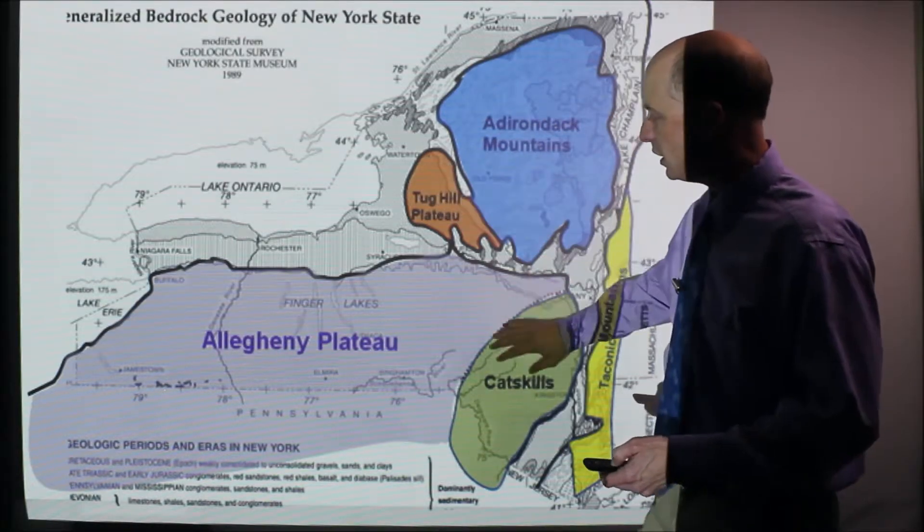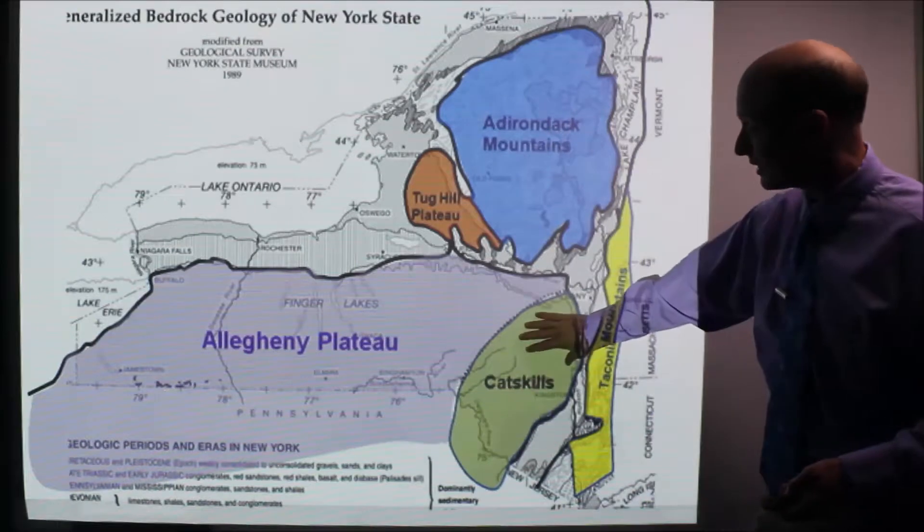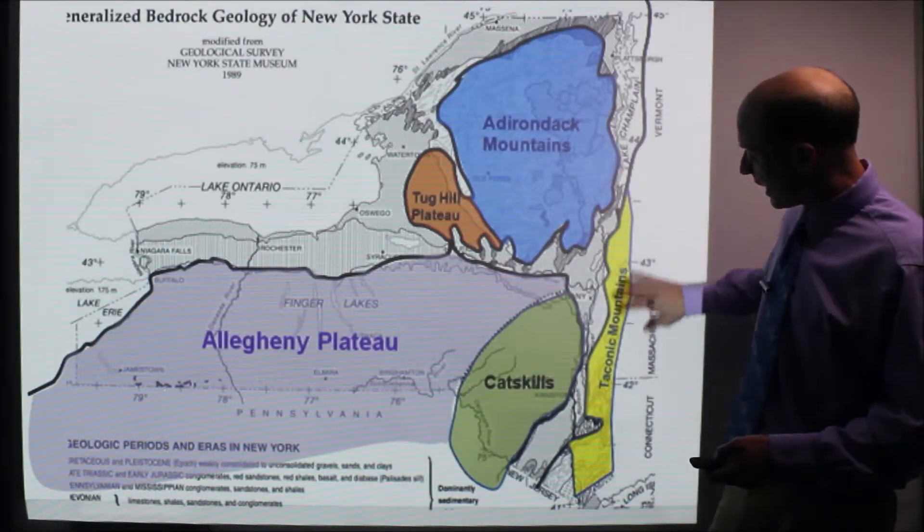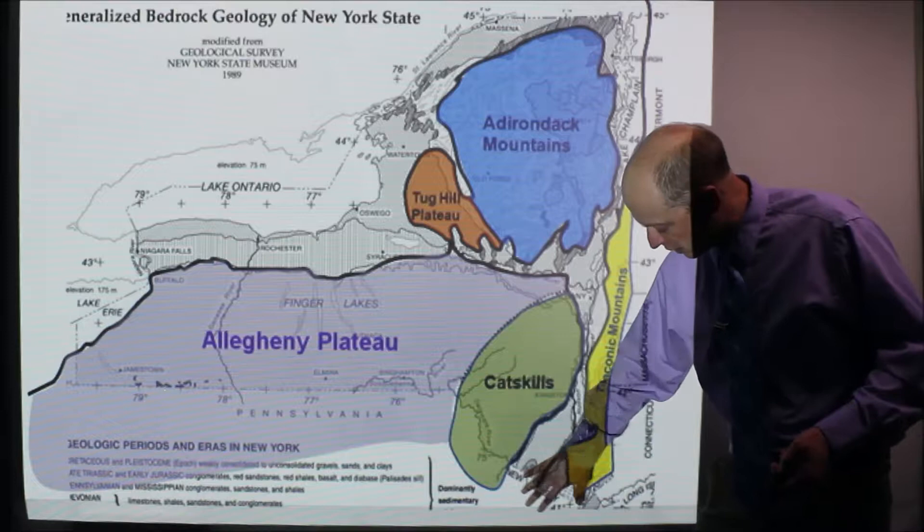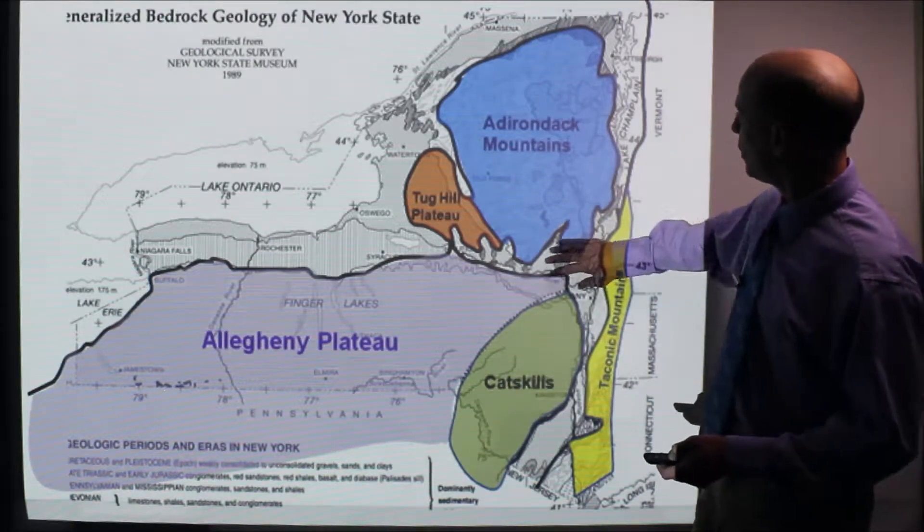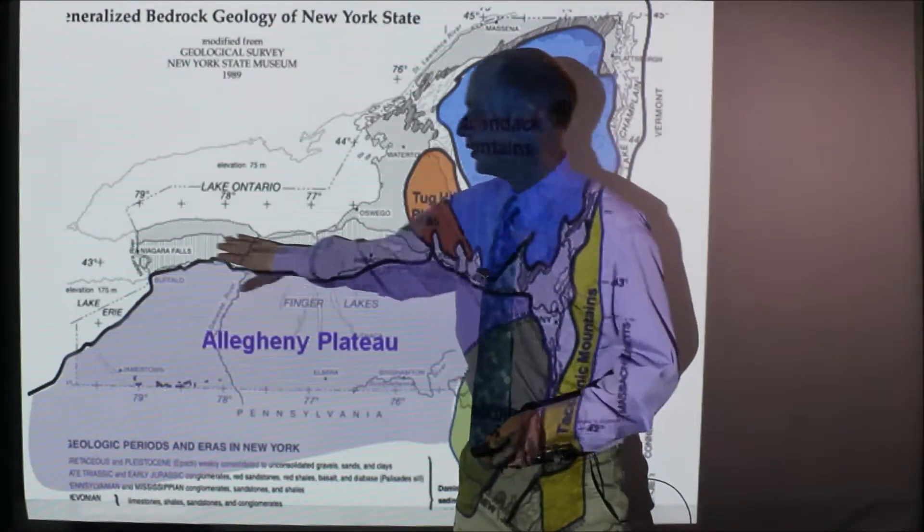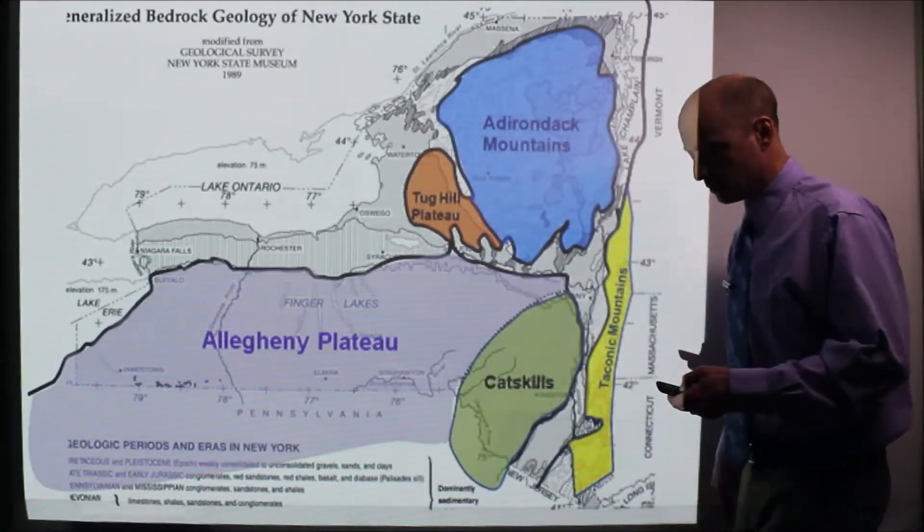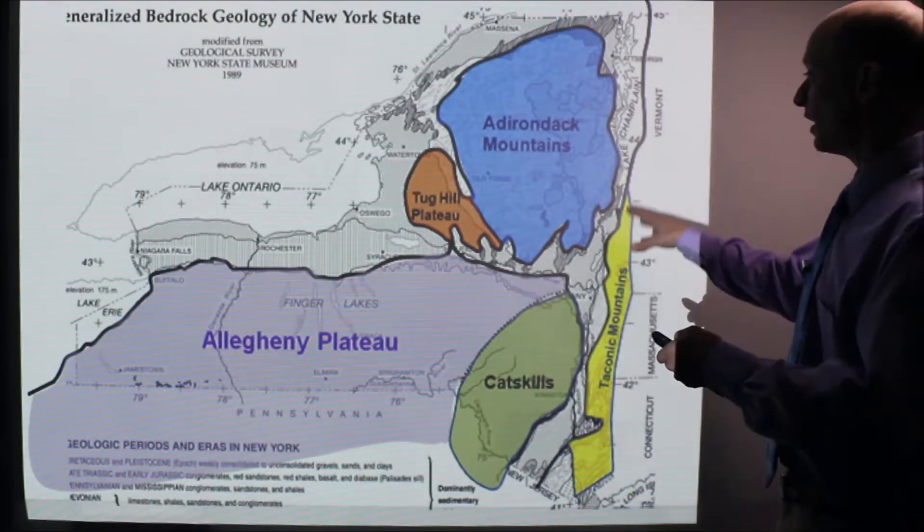So Adirondack Mountains are here in blue. Tug Hill Plateau is here. Allegheny Plateau. The Catskills, also a plateau here. The Taconic Mountains, it gets a little complicated down here. Sorry, Long Island, I cut you off. And these are all lowlands here, lowlands. There's lowlands out here, so I didn't color those in, but it gives you a sense of one laid over the other, which is kind of nice.